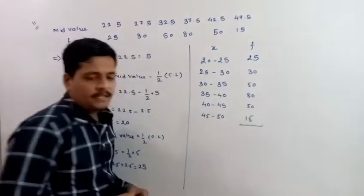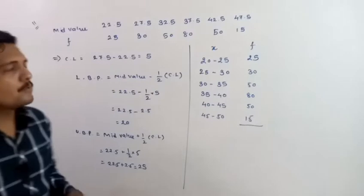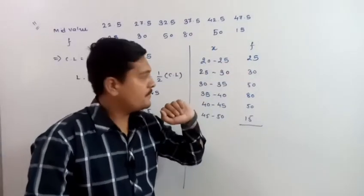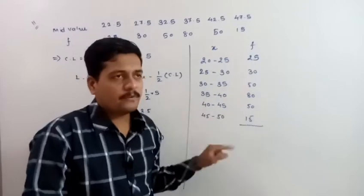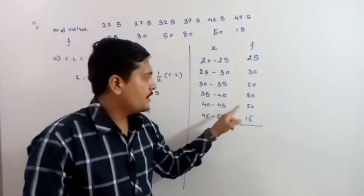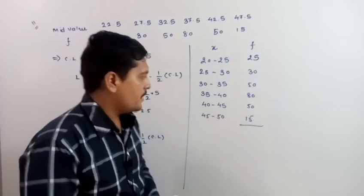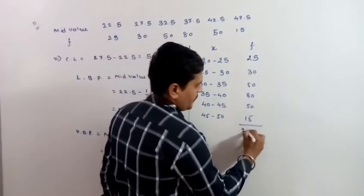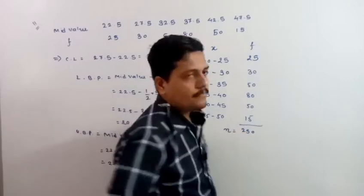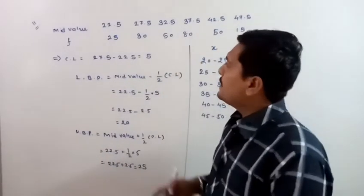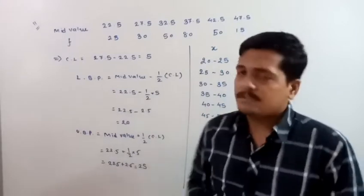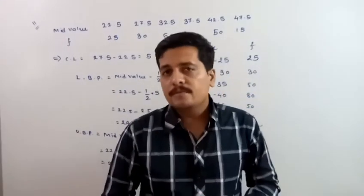Remember to calculate the total: 25 + 30 = 55, + 50 = 105, + 80 = 185, + 50 = 235, + 15 = 250. So in this way, you can recover the frequency distribution from mid values.